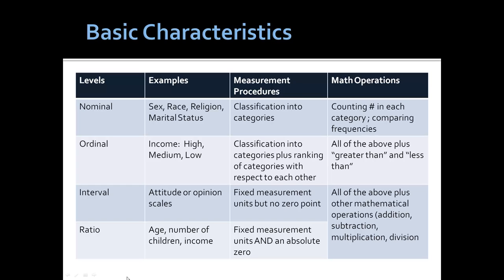Ordinal is the classification into categories plus a ranking of the categories with respect to each other — for example, income as high, medium, or low, or social class as high, medium, or low. Interval would be attitude or opinion scales where the possibilities range from 1 — agree completely — to 4 — totally disagree. It has a fixed measurement unit but no absolute zero point; a thermometer is another example. The richest source of information is always a ratio scale, such as age, number of children, or income. It has fixed quantifiable measurement units and an absolute zero, so all mathematical operations can be performed: addition, subtraction, multiplication, division, and means.